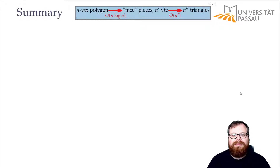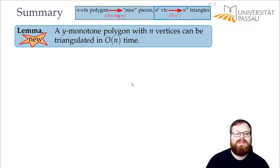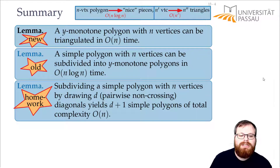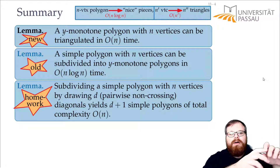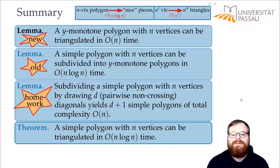To summarize: starting from an n-vertex polygon, in O(n log n) time we find y-monotone pieces of n' vertices total, and in O(n') time we find n'' triangles. A y-monotone polygon with n vertices can be triangulated in O(n) time. For a simple polygon, we divide into y-monotone polygons in O(n log n). The homework will show that the total complexity of all the y-monotone polygons is still O(n) — even though some vertices appear in multiple polygons — so the sum of all their vertices remains linear. Therefore, we can triangulate a simple polygon with n vertices in O(n log n) time.